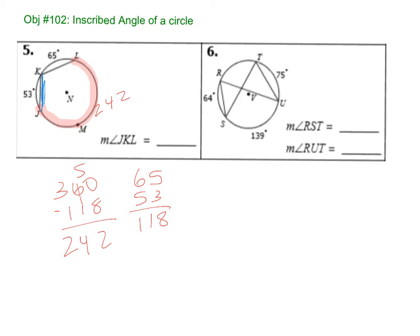JKL is this angle. Right? So what's the relationship between the arc and the angle? I need to divide by 2. 121. That's it.